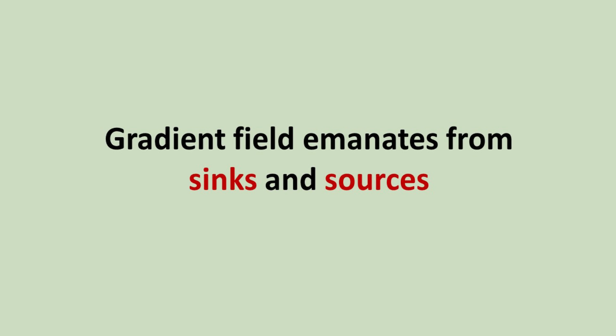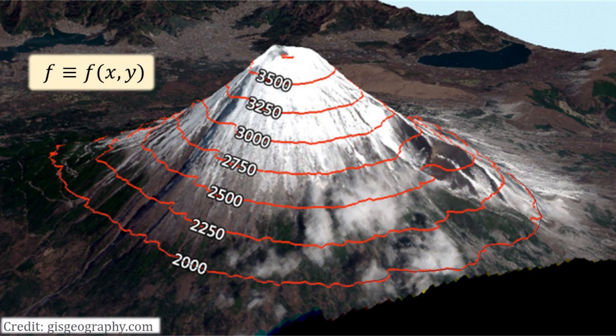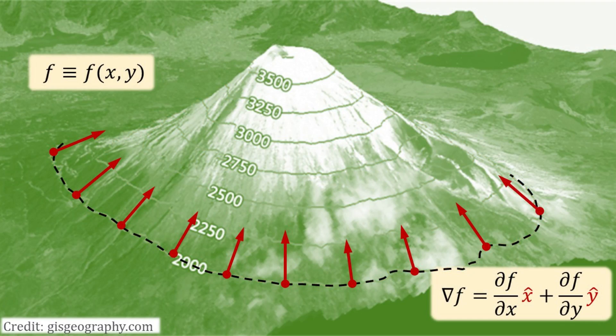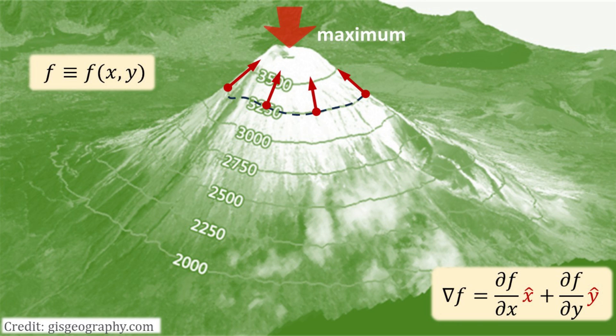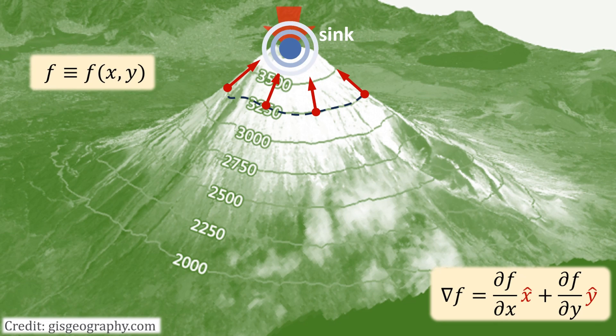Gradient field emanates from sinks and sources. Let's consider a 2D scalar field for the elevation of a terrain. We show here the contour lines for the different elevation. The gradient field points along the direction of greatest ascent. If one goes along the direction indicated by the gradient field, one would be led to a higher elevation. This continues until we reach a local maximum. The key intuition I would like to drive across here is that these local stationary points are sinks and sources for the gradient field, from which the gradient field emanates from and converges to.